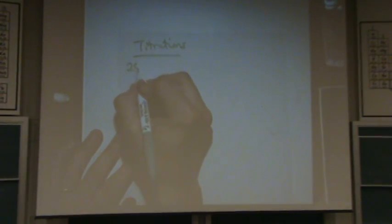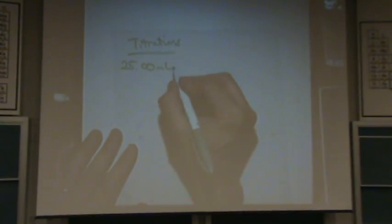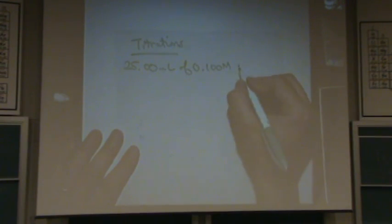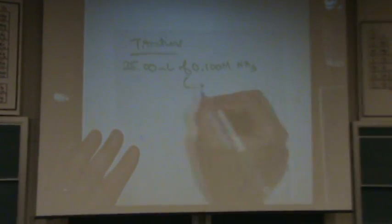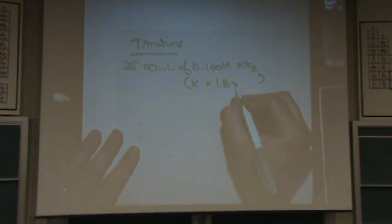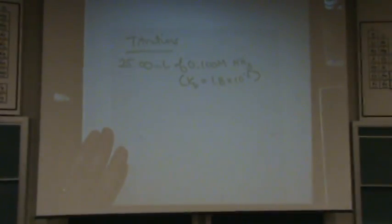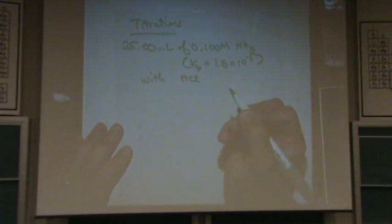I'm going to have 25.00 milliliters of 0.100 molar NH3. And I have a K what for NH3? Well, it's a base, so it better be a Kb. NH3 is a base. I'm going to titrate this with HCl. And it's going to be 0.100 molar.